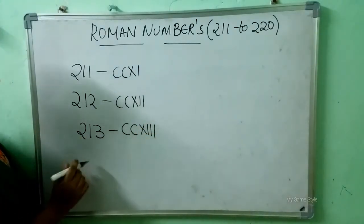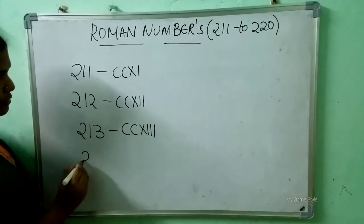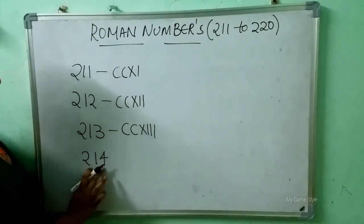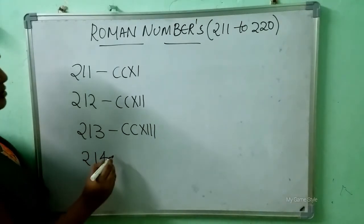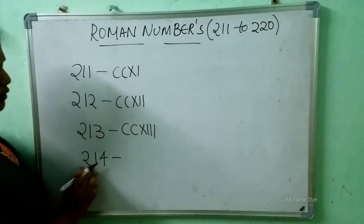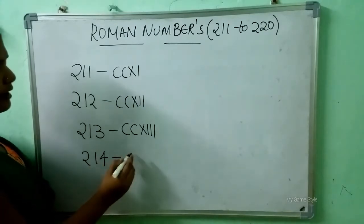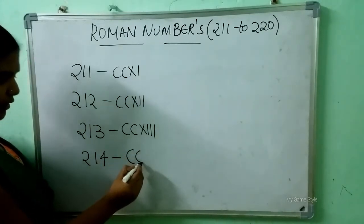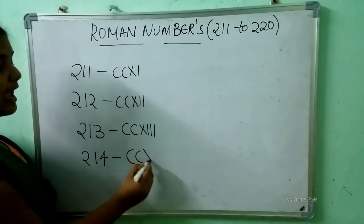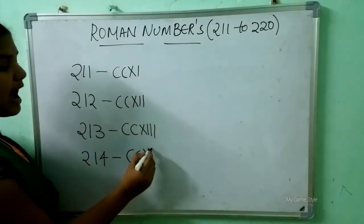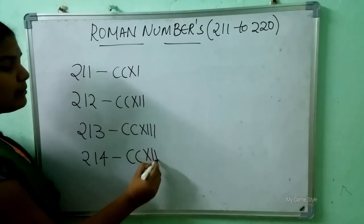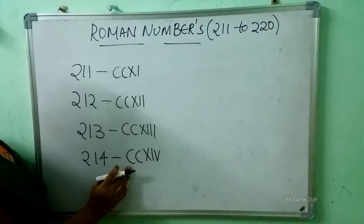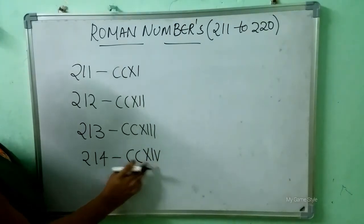After 213 comes 214. So how to write 214 here? Double C is 200, X, I, V means 14. So this is 214.